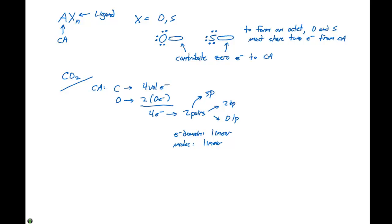Let's draw the Lewis structure for CO2. We have two oxygens bound to the central carbon. The oxygen on the left has an octet and the oxygen on the right has an octet, but carbon does not. Unlike boron and beryllium, carbon will not violate the octet rule. So to reach an octet, we have to form a double bond. We can take one lone pair and form a double bond, giving carbon six electrons, then take the second lone pair and form another double bond to complete the CO2 molecule.